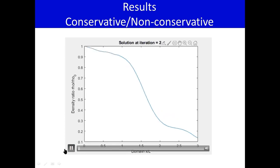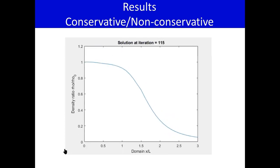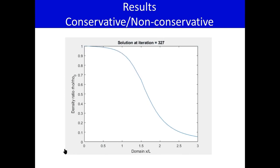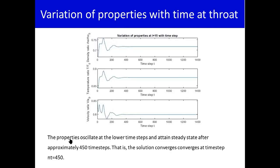The simulation starts from iteration one and keeps refining the solution. After about 400 to 500 iterations it reaches steady state, after which the variation becomes very small and the solution converges. Looking at how properties vary with time at the throat specifically, we see large-amplitude oscillations initially, which then stabilize after approximately 400 time steps.